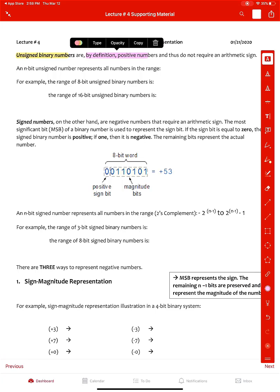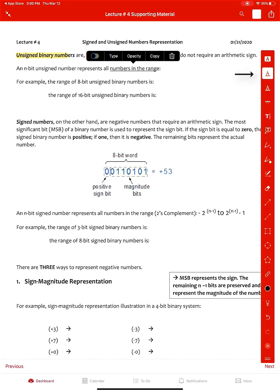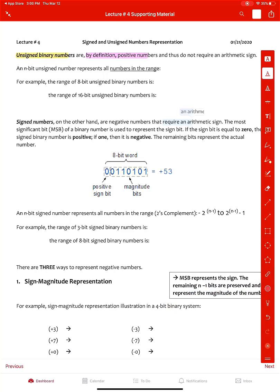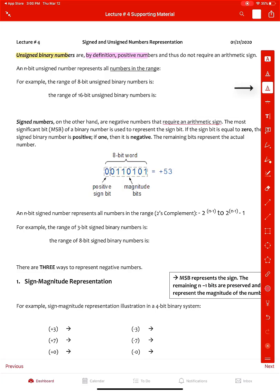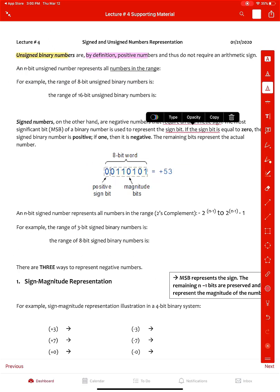Moving on to the second one — this is the underliner. Again, you can use different colors if you like, say red, and then you can underline. And there's also this one — okay, it's a zigzag underliner.